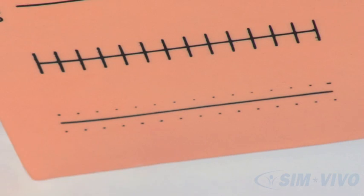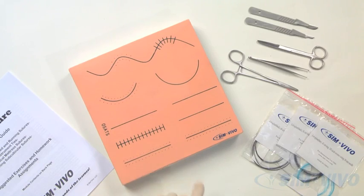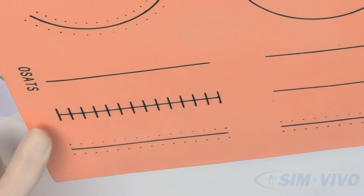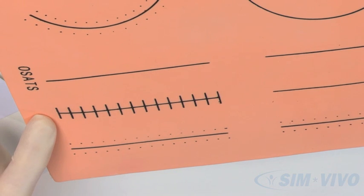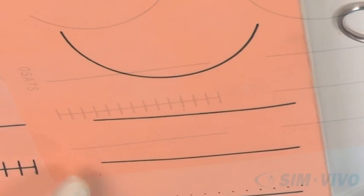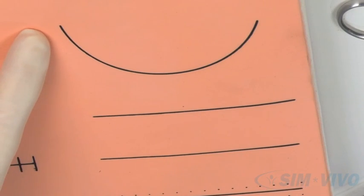Some of the lines have dots to direct the placement of simple sutures, and some of the lines have crosshatches that facilitate the practice of subcuticular suturing. The real challenge comes with the closure of the lines without markers.